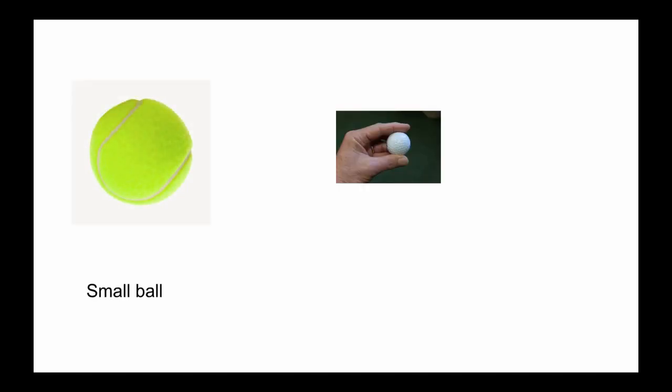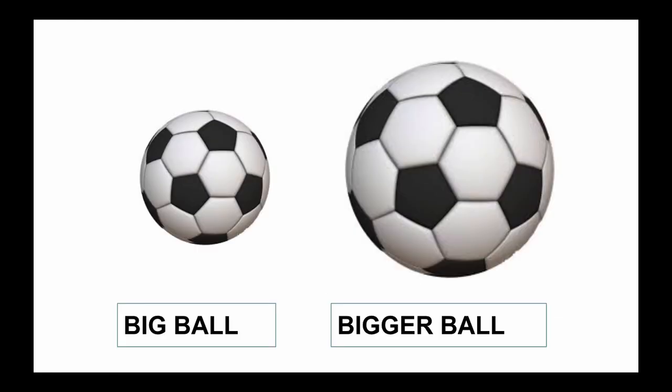Now let us learn what is small and how do we compare two small objects. This is a small ball. We have one more ball which is even smaller, so we will use the term smaller ball. When we have to compare the size of two small objects we use small and smaller. When comparing two big objects, we use big and bigger.